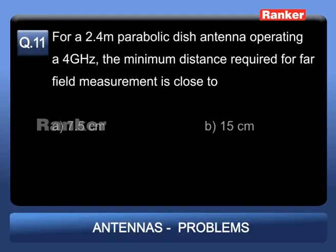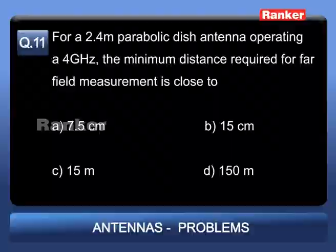Problem 11: For a 2.4-meter parabolic dish antenna operating at 4 GHz, the minimum distance required for far-field measurement is: Option A: 7.5 cm; Option B: 15 cm; Option C: 15 m; Option D: 150 m.